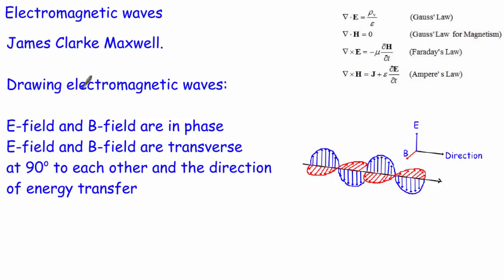He also looked at the characteristics of these waves and how the electric and magnetic fields interact. In an exam you may be asked to draw or describe electromagnetic waves. The three key things the exam board want are: the electric and magnetic fields are in phase, both fields oscillate in a transverse way, and both fields are perpendicular to each other and to the direction of energy transfer. Drawing a diagram often gets you all three marks.